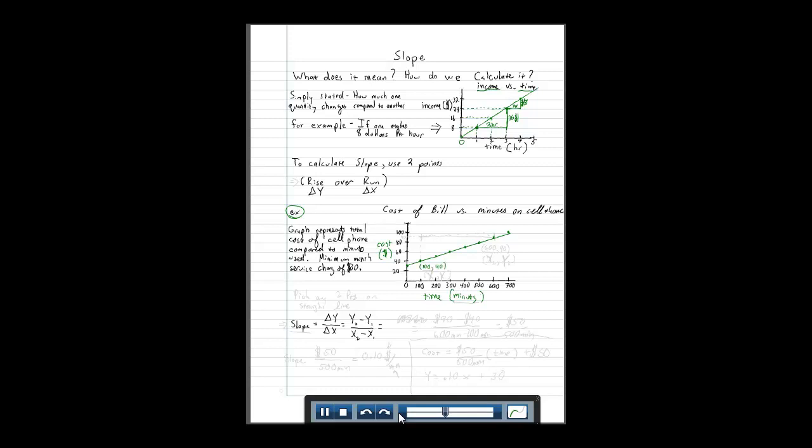And let's say, at 600 minutes, we have this point, 600, our cost is $90.